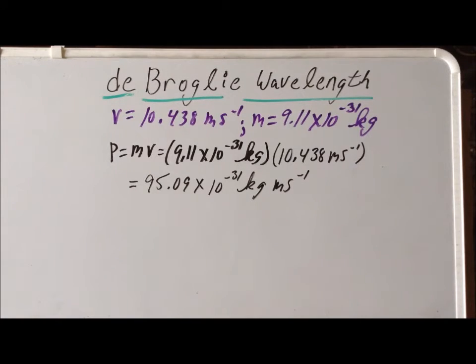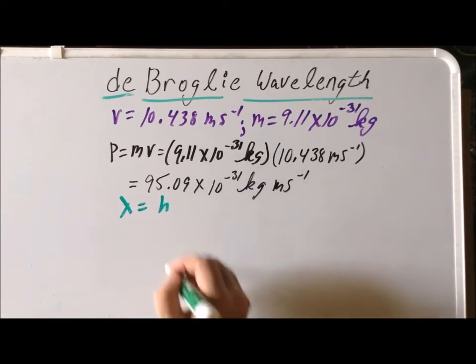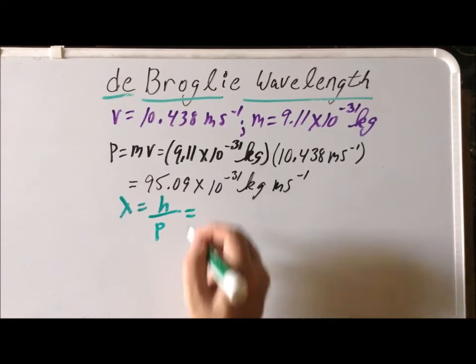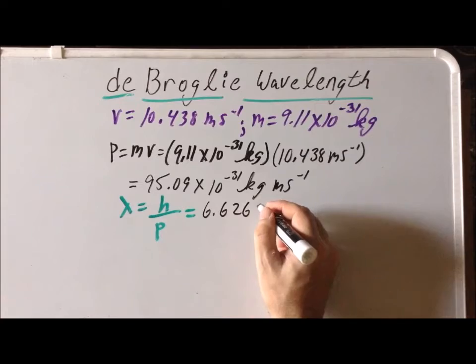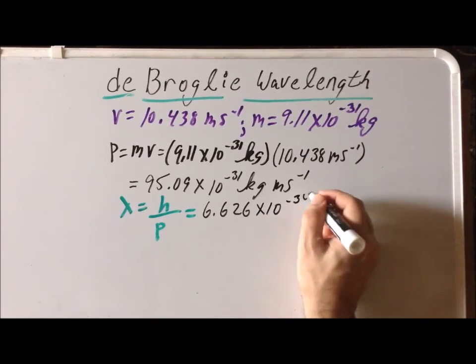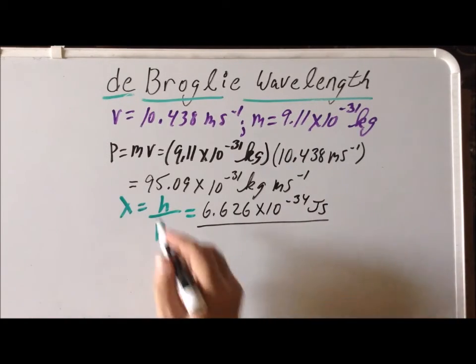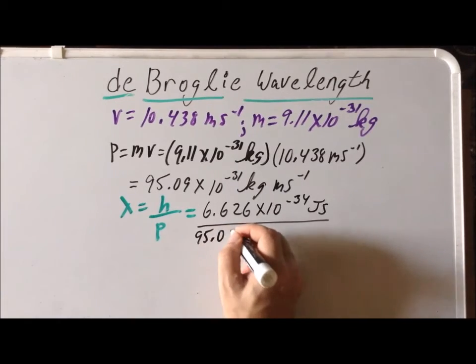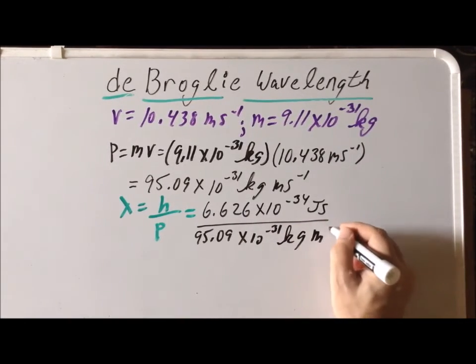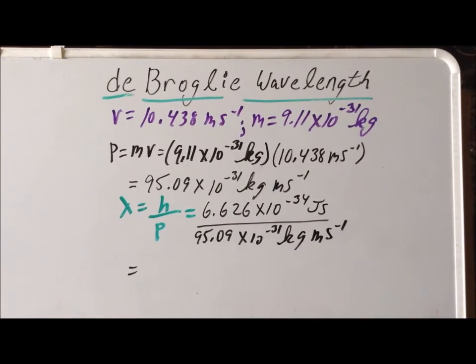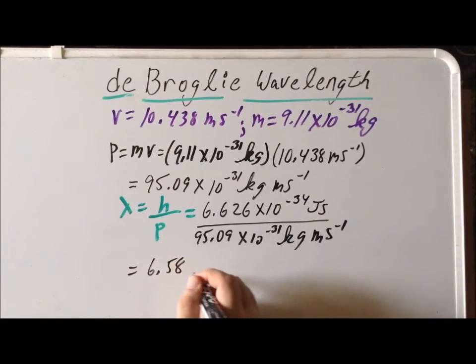So now we can use the de Broglie relationship, which we recall is that the associated wavelength is going to be Planck's constant H divided by the momentum. And in this particular case, the values are going to be 6.626 times 10 to the minus 34 joule seconds for Planck's constant H, and we know our momentum is going to be 95.09 times 10 to the minus 31 kilogram meters per second. We know from our previous calculation that this combination of units reduces simply down to meters, and the numerical value is going to be 6.58 times 10 to the minus 5 meters.